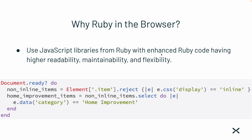You can also use JavaScript libraries from Ruby with enhanced Ruby code having higher readability, maintainability, and flexibility. This is an example of using jQuery from Ruby in the browser — document ready, and then instead of the jQuery dollar sign API, Ruby uses 'elements' and it's more readable and understandable. You can use standard Ruby iterators with it like reject and select, mixed with jQuery. It's just a lot more readable than jQuery code directly in JavaScript.